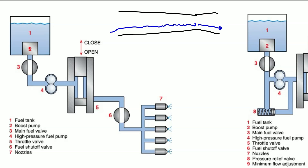In this first picture we have our fuel tank, a boost pump supplying pressure to the engine-driven pump, a main fuel valve or shutoff valve for that tank, and our engine-driven pump going to our throttle valve. This throttle valve is not metering air like it would on a reciprocating engine — it's metering fuel. We have a sliding valve allowing fuel from the engine-driven pump to expose an orifice and flow to the engine nozzles. Between the nozzles and the throttle valve we have a fuel shutoff valve, which is an FAA requirement.